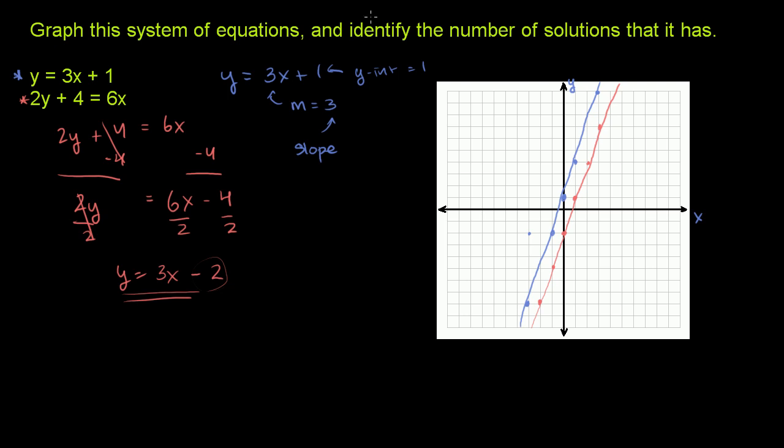Now the whole point of this question was to identify the number of solutions that it has, the system. A solution to a system of equations is an x and y value that satisfy both of these equations. Now if there were such an x and y value that satisfied both of these equations, then that x and y value would have to lie on both of these graphs, because this blue line is all of the pairs of x and y's that satisfy the first equation. The red line is all of the pairs of x's and y's that satisfy the second equation. So if something's going to satisfy both, it's got to be on both lines. When you look here, are there any points that are on both lines?